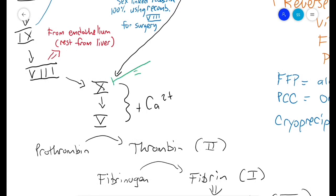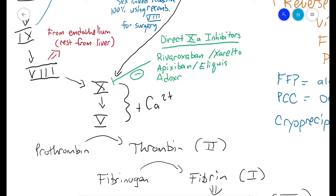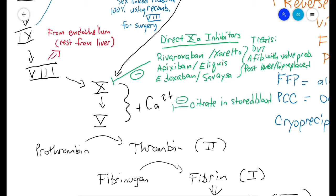Let's talk about some medications. There are direct factor 10a inhibitors - the 'a' stands for activated. These include rivaroxaban (Xarelto), apixaban (Eliquis), and edoxaban (Savaysa). These direct 10a inhibitors are commonly used to treat DVT, PE, and atrial fibrillation without valve disease, and sometimes post-knee or hip replacement.